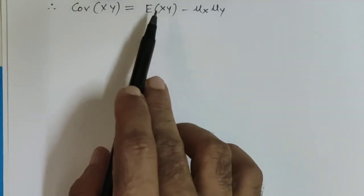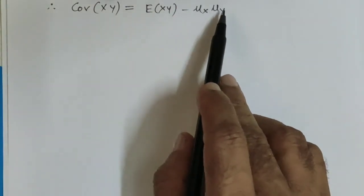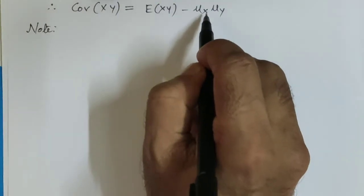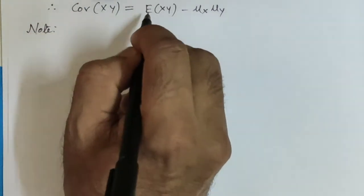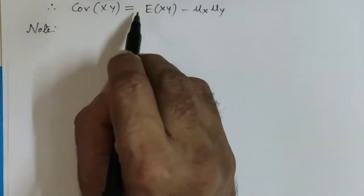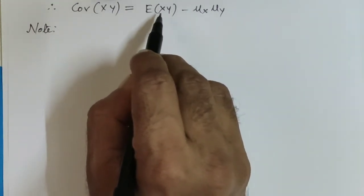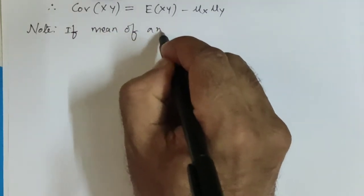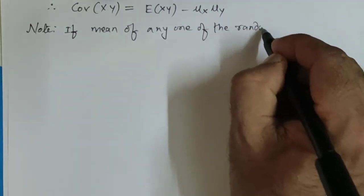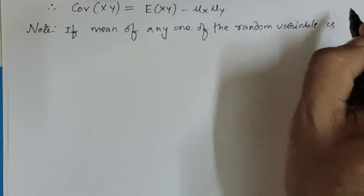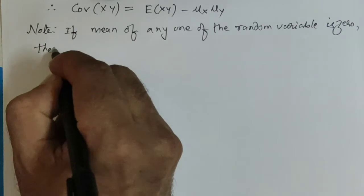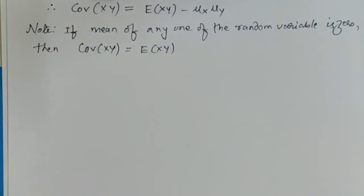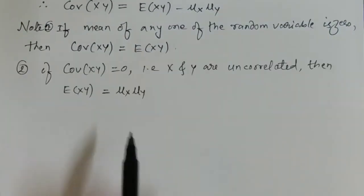So Cov(X, Y) = E[XY] − μ_x·μ_y. Note that E[XY] is also known as the correlation. A key observation: if the mean of either X or Y is zero, then Cov(X, Y) equals E[XY], meaning covariance equals correlation when any one random variable has zero mean.